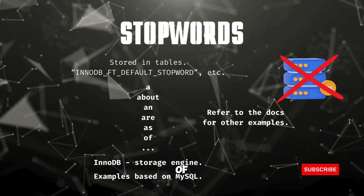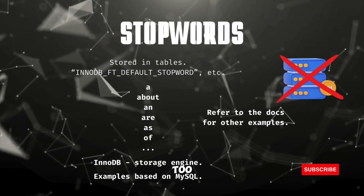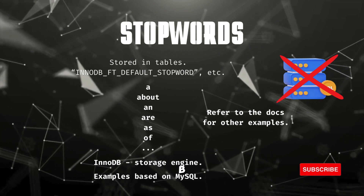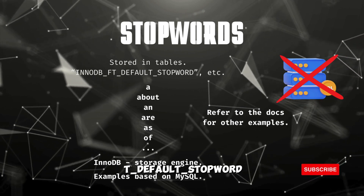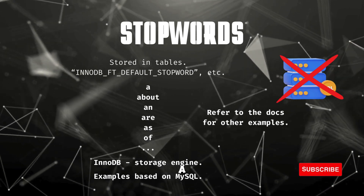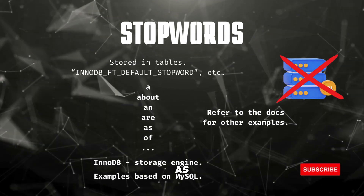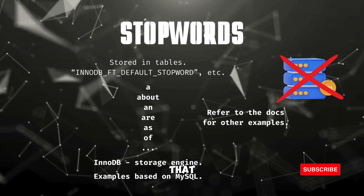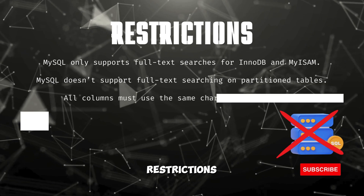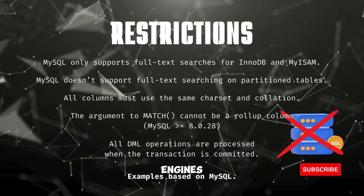Full text searches have a list of stop words and a bunch of restrictions too. Stop words in MySQL are stored in a table called innodb_ft_default_stopword and include basic words like a, about, an, as, off, on, or, that, and so on.